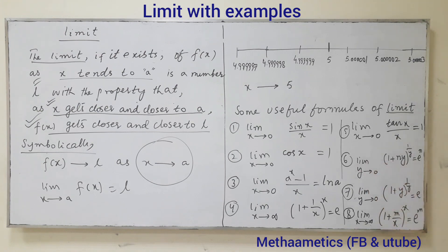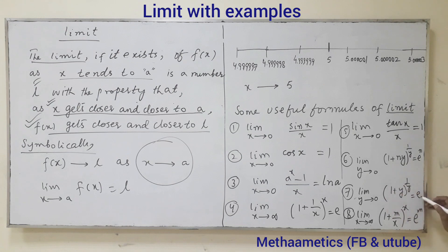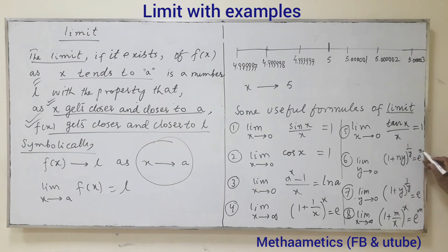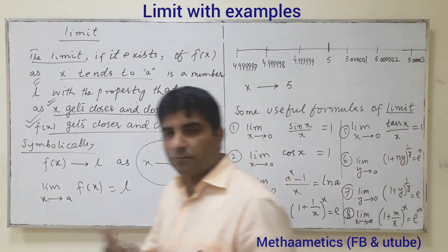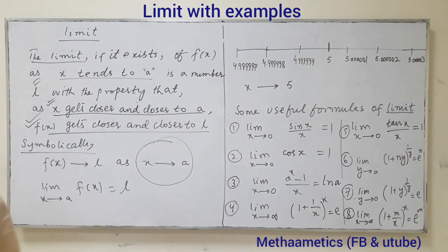Formula 4 — limit as y tends to 0 of (1 plus ny) whole power 1 upon y equals e^n. These two formulas are similar with just a difference in n. Formula 5 — limit of tan x upon x equals 1. These formulas are useful and we will use them for finding limits.